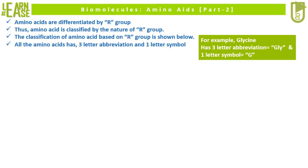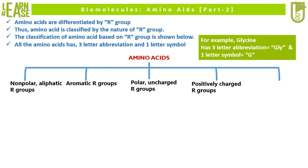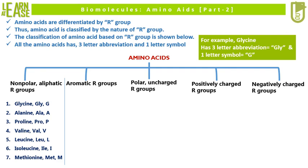For example, glycine has the three-letter abbreviation GLY and one-letter symbol G. Five groups of amino acids based on R group classification are: amino acids with nonpolar aliphatic R groups, amino acids with aromatic R groups, amino acids with polar uncharged R groups, amino acids with positively charged R groups, and amino acids with negatively charged R groups. Glycine, alanine, proline, valine, leucine, isoleucine, and methionine are categorized under amino acids with nonpolar aliphatic R groups.